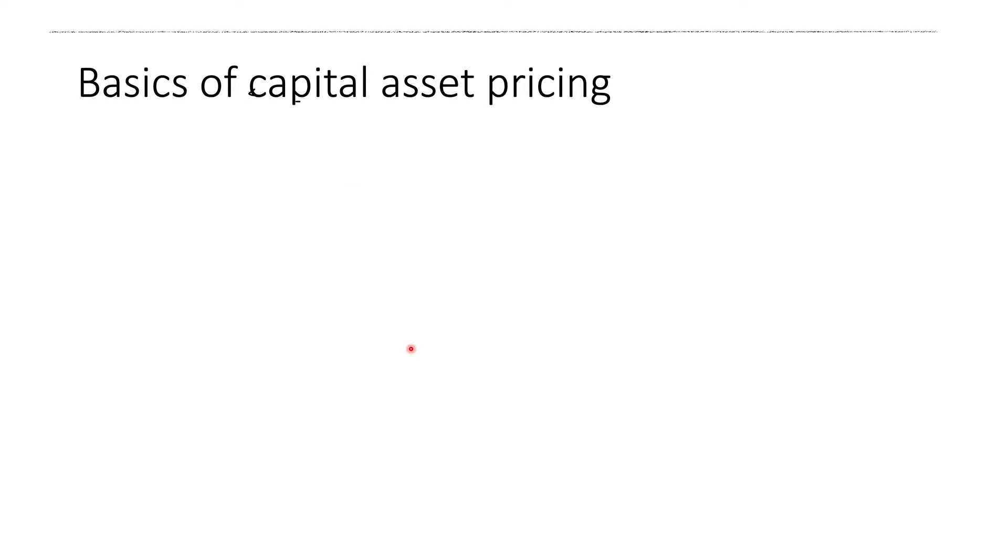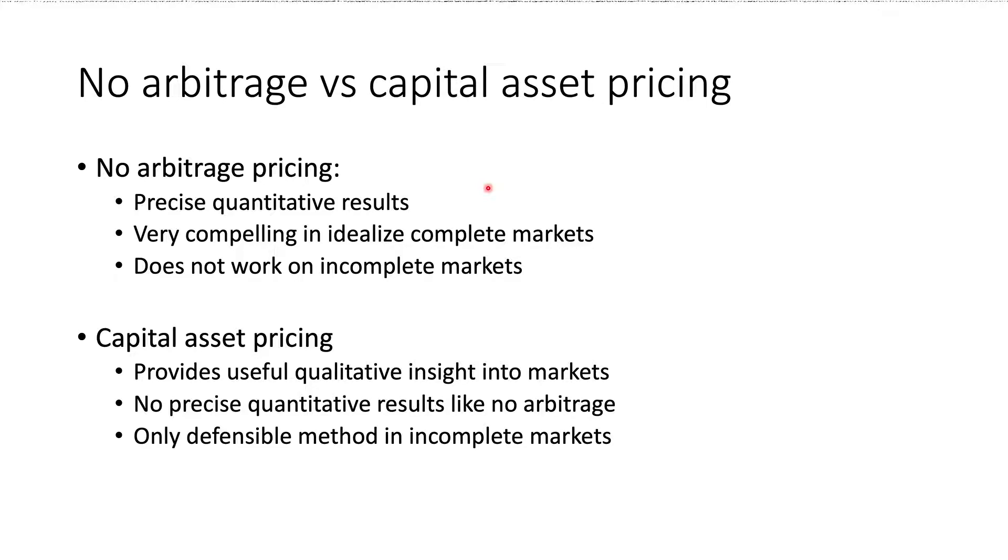So here we go. Basics of capital asset pricing. Capital asset pricing can be seen as an alternative to the arbitrage pricing model. Generally speaking, there are two different methods to model asset prices. The no arbitrage model assumes that there is no arbitrage in the market and we use that fact to price derivatives as we have done so far in this book. Then as a contrast, there's the capital asset pricing, which emphasizes the market demand and supply, and also uses a utility function that converts units of consumption into units of happiness. So let's dig a little bit deeper into this and try to understand these two.